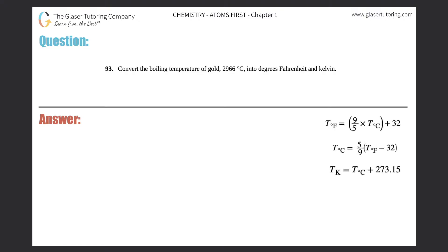Number 93: convert the boiling temperature of gold, 2966 degrees Celsius, into degrees Fahrenheit and Kelvin. We're doing temperature conversions — we've almost reached the end of this chapter. So we have to turn this Celsius temperature into Fahrenheit and Kelvin.